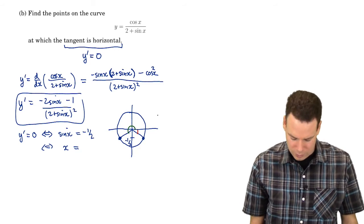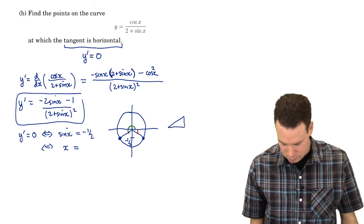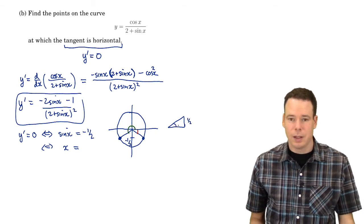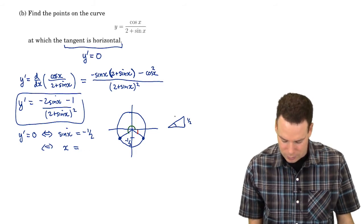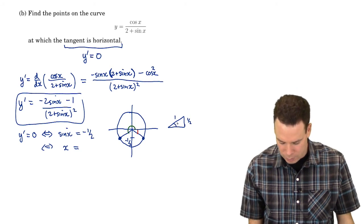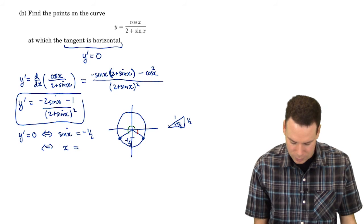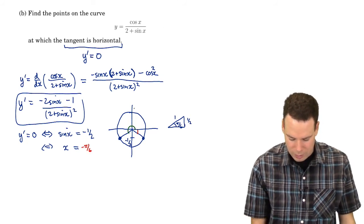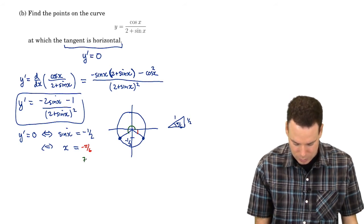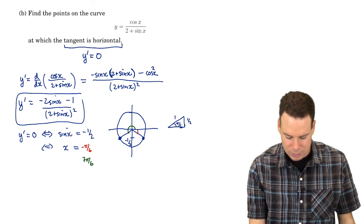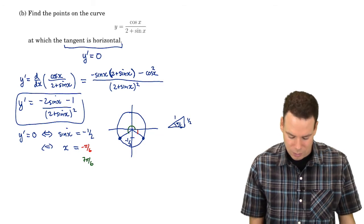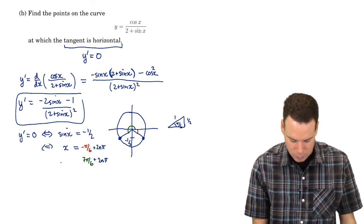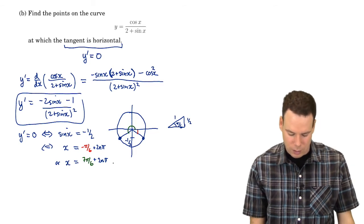For both of those angles, we need the reference angle. The triangle here has opposite side 1/2 and hypotenuse 1, so our reference angle is π/6. That means our two angles are negative π/6 and π plus π/6, which is 7π/6. There are infinitely many x values that satisfy this — these are our two basic ones, but we also add any multiple of 2π. So x equals negative π/6 plus 2nπ, or x equals 7π/6 plus 2nπ, where n is any integer.